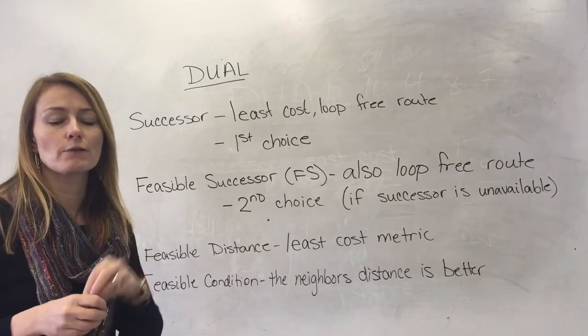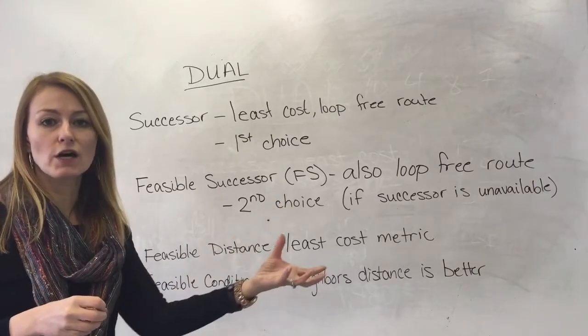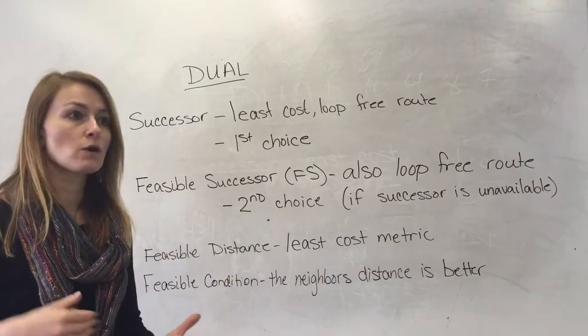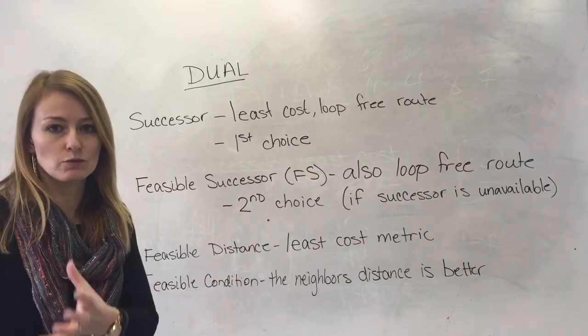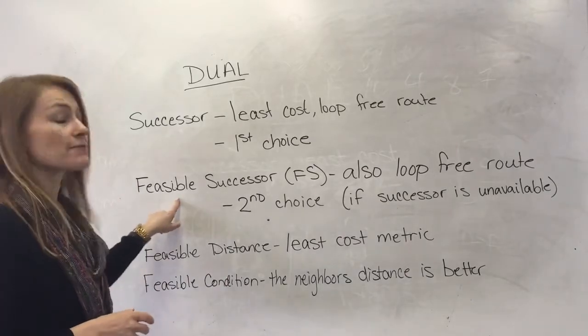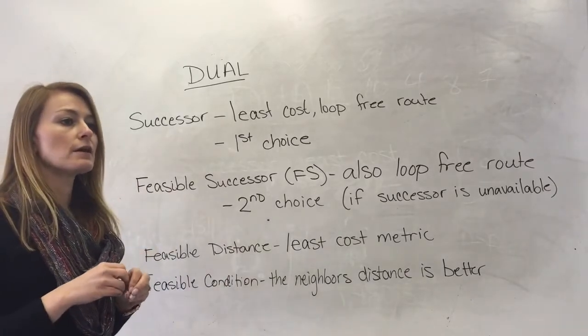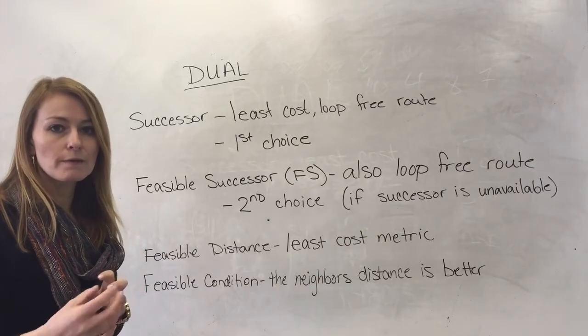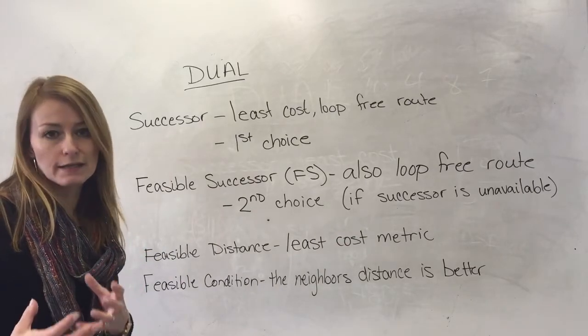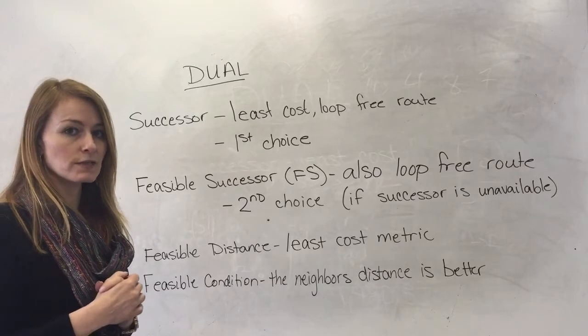If the road that you take from home to work every day is not available because there's construction, you find the next best route. The feasible successor is the next hop or the neighbor that would be your second choice if the successor is unavailable.